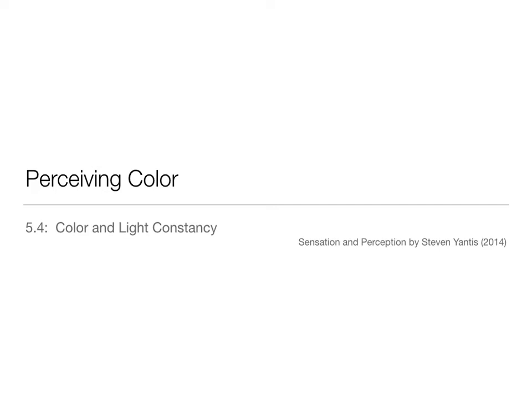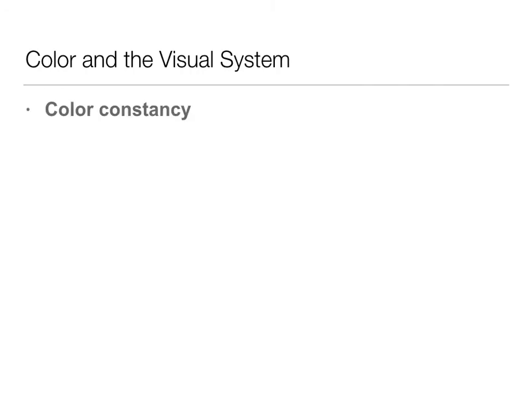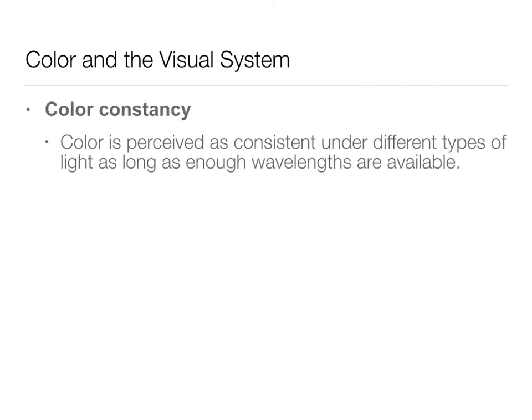Dr. Atchison here and we're finishing up Chapter 5. This is our fourth lecture talking about color and light constancy. Color constancy is the idea that we're going to perceive a color as constant even though it's in different illuminations, different lighting conditions, as long as there's enough wavelengths available.